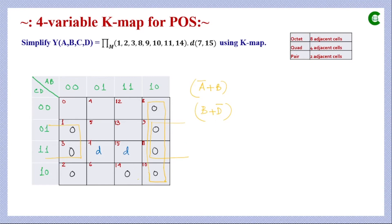There is one zero not yet in any group, adjacent to a don't care term. Since this is based on max terms, the don't care term is treated as 0. Together they form a quad. Evaluating: A is 1 (becomes A'), B changes (eliminated), C is 1 (becomes C'), D changes (eliminated). With OR operation, the simplified term is A' + C'.